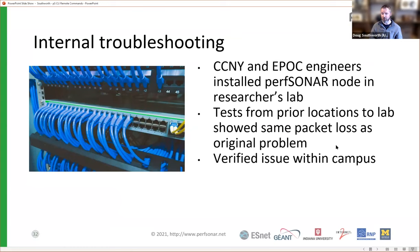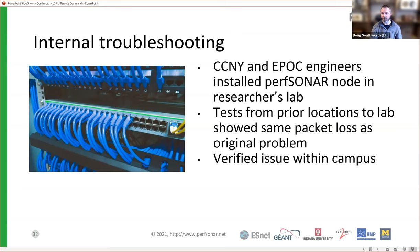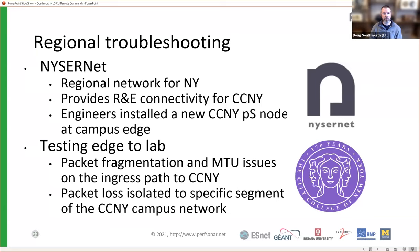We put a perfSONAR node in the researcher's lab to get as close to the endpoint having performance problems as possible. Those tests looked exactly like his transfer tests — we were getting one-directional loss from his lab out. So now we knew we had a problem somewhere on campus. We got Nisernet involved; they did some testing from the edge of their network into the lab and were seeing problems even just from Nisernet into CCNY, confirming the problem was on that network. We also saw some packet fragmentation issues that looked like an MTU issue but weren't — it was inconsistent packet dropping.